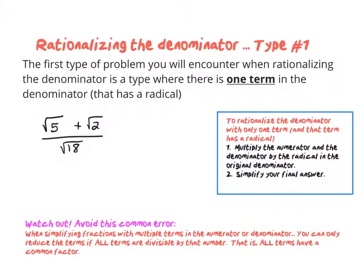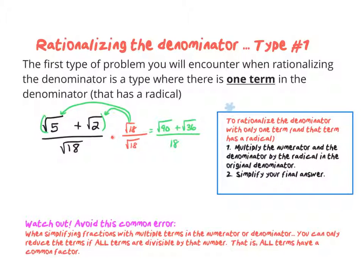Here's another example where there's one term in the denominator — the square root of 18. We multiply the numerator and denominator by root 18. On top, we need to use the distributive property: root 18 times root 5 is the square root of 90, and root 2 times root 18 gives the square root of 36, since 2 times 18 is 36. On the bottom, root 18 times root 18 is 18. Now the square root of 90 simplifies to root 9 times root 10, and the square root of 36 is 6. So we get 3 root 10 plus 6 over 18.